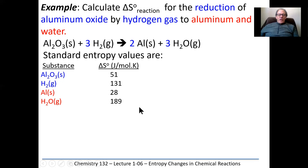Here are the entropy values from a table. Notice that in general the entropies of gases are higher than the entropies of solids — that makes sense because there are more random states possible with a gas. With a solid, the particles are arranged in crystals most of the time and have a more ordered state. Gas particles are free to roam around and move, so there are more possibilities for random states with gases.